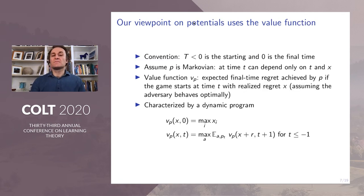We will now develop our viewpoint on potentials, and we will use exponential weights to illustrate it in the context of upper bounds. Our viewpoint on potentials uses the value function. Our time counting convention is that the starting time capital T is negative and zero is the final time. We also assume that the player is Markovian.